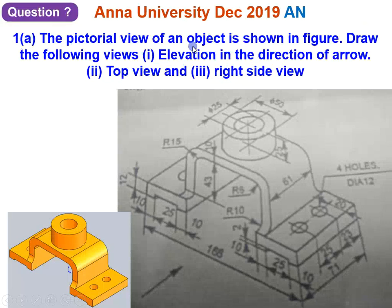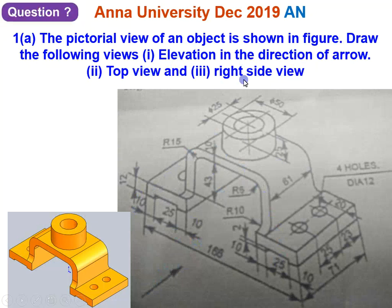The pictorial view of an object is shown here. For this object, you have to draw the elevation, front view, in the direction of arrow. The direction of arrow is shown here, so this view is the front view. You have to draw elevation front view, top view, and right side view. As per the first angle projection, the right side view must appear to the left of the front view.